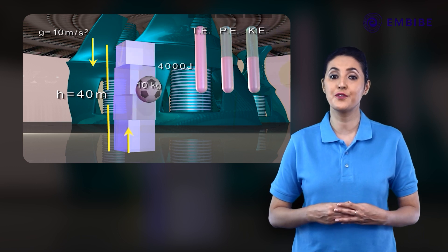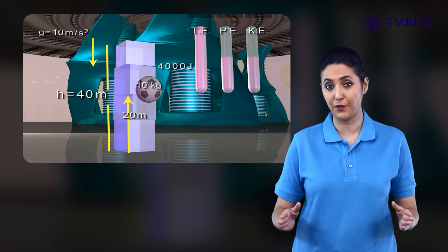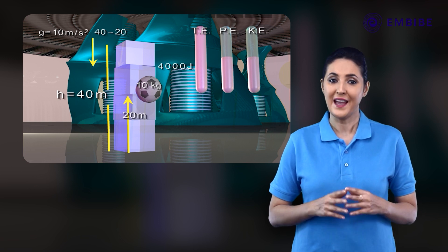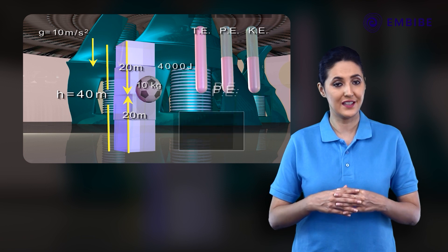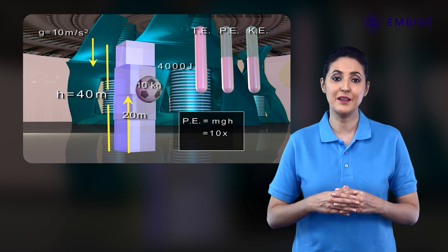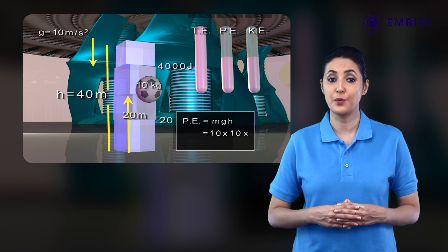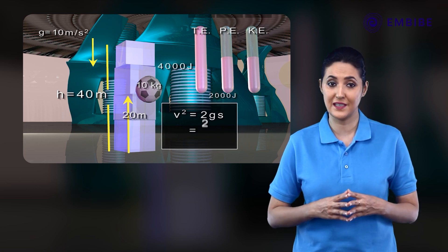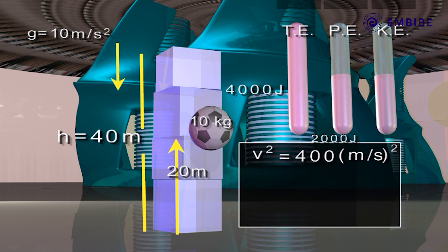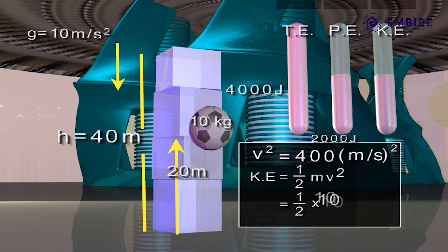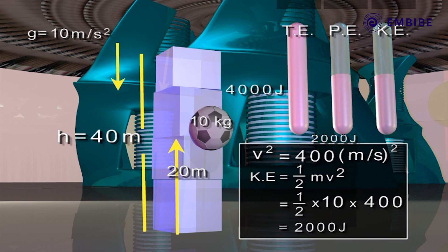As the body starts moving downwards, it gains kinetic energy. At a height of 20 meters, the body has actually fallen through a distance of 40 − 20 = 20 meters. At this height, the body has potential energy = MGH = 10 × 10 × 20 = 2,000 joules. The square of velocity is 400 m²/s², hence kinetic energy = ½mv² = ½ × 10 × 400 = 2,000 joules.